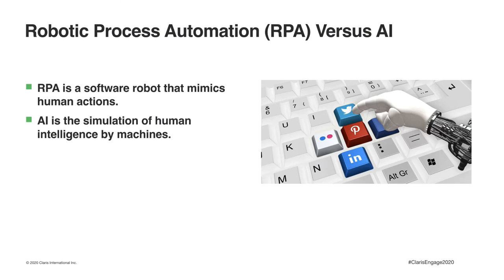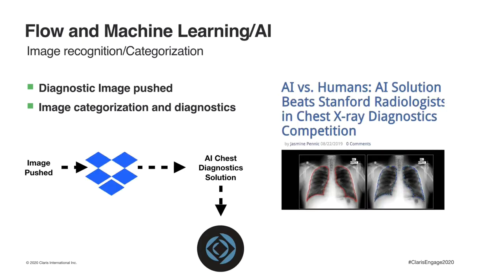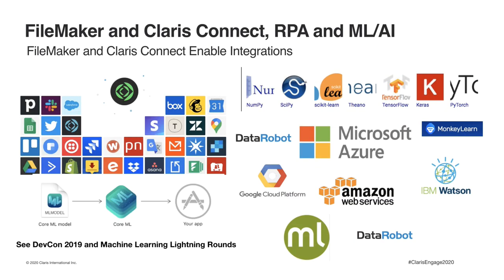When you move up to machine learning or AI, that is simulating human intelligence versus human actions — that's the difference between robotic process automation and AI. An example within Claris Connect: the image is pushed to Dropbox in another flow, and then that image uses categorization AI and diagnostics AI to determine the health of that image — in this example, that would be a chest X-ray. There are a lot of tools available to integrate with FileMaker or work in conjunction with Claris Connect. You can also look at past DevCon talks to see other integrations with image categorization and sentiment analysis.